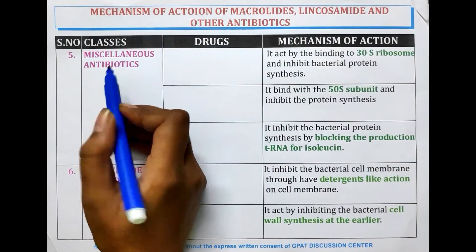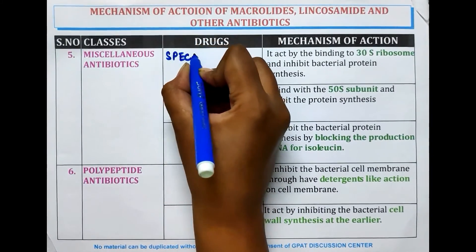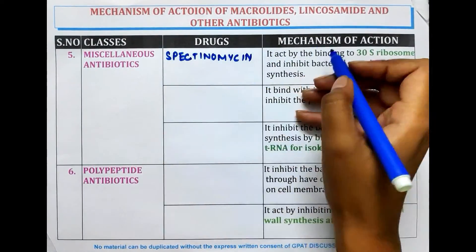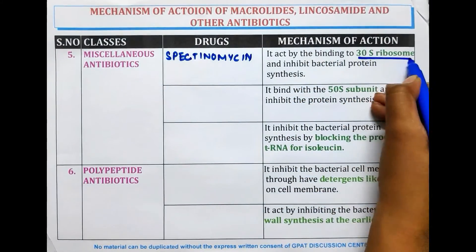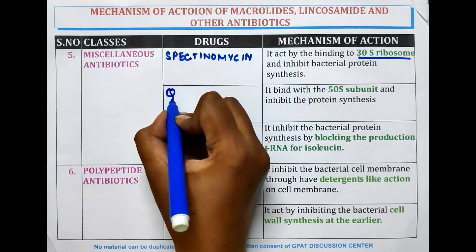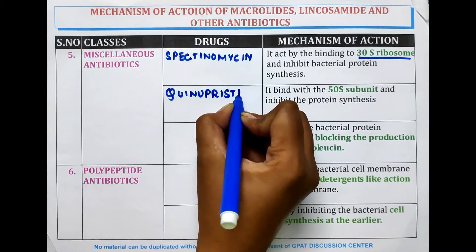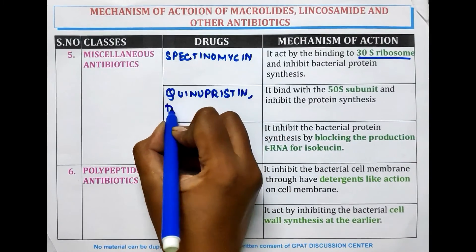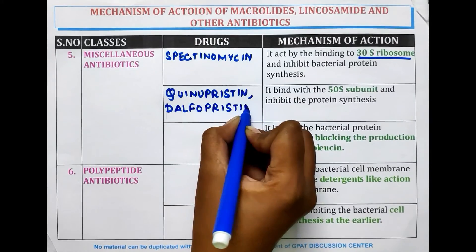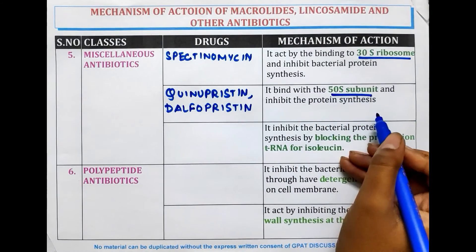Miscellaneous antibiotics such as Spectinomycin bind with the 30S ribosome and inhibit bacterial protein synthesis. Next are Quinupristin and Dalfopristin — these two drugs bind with the 50S subunit and inhibit protein synthesis.